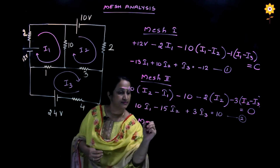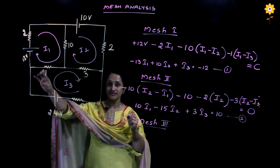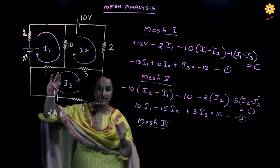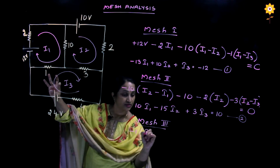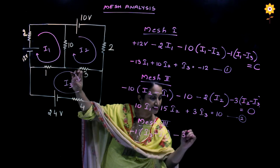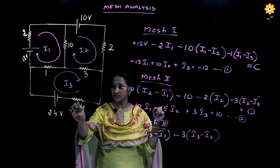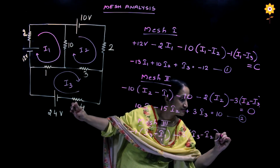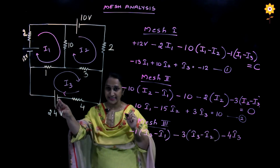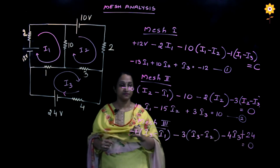For mesh 3, the 1-ohm resistor carries currents I3 and I1 in opposite directions, so we write minus 1 times (I3 minus I1). The 3-ohm resistor has I3 and I2, so minus 3 times (I3 minus I2). Moving clockwise, only I3 flows through the 4-ohm resistor, giving minus 4 times I3. When I3 reaches the voltage source and first touches the negative sign, we write plus 24.